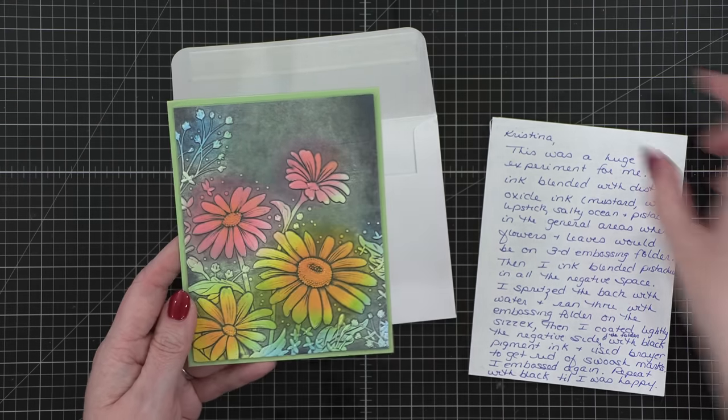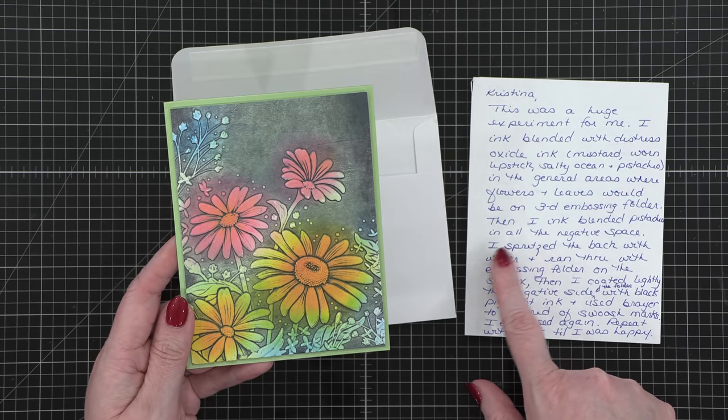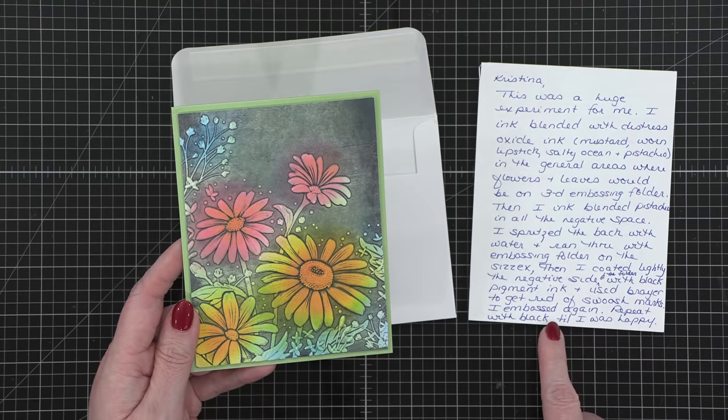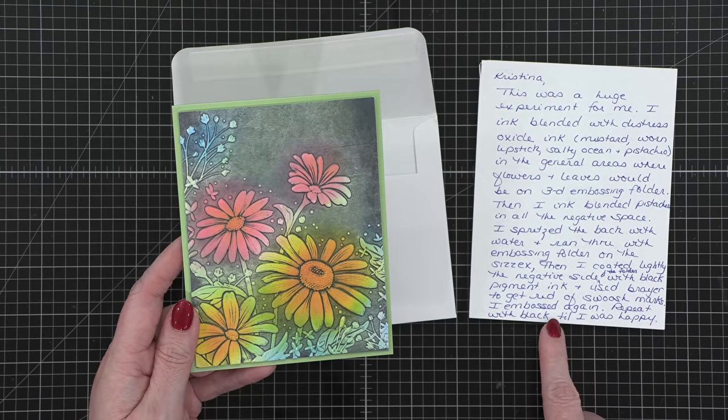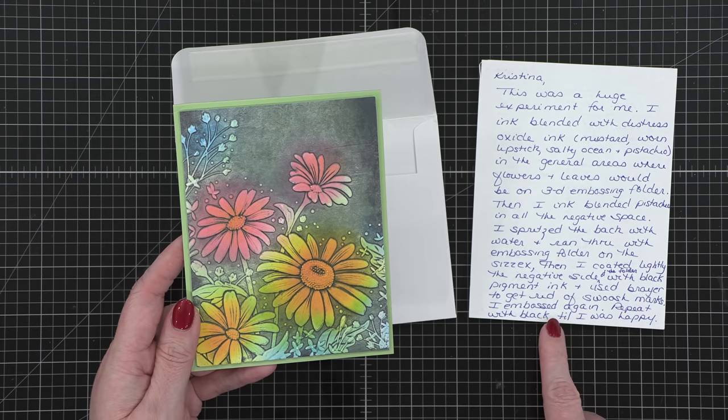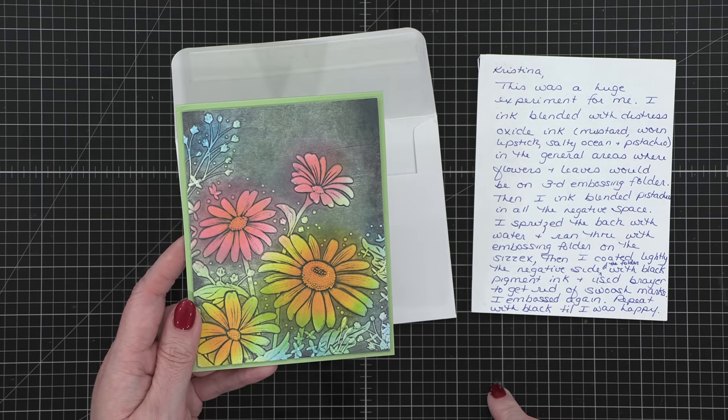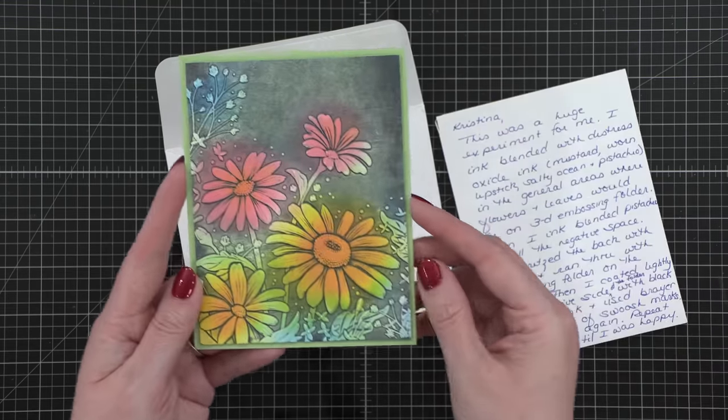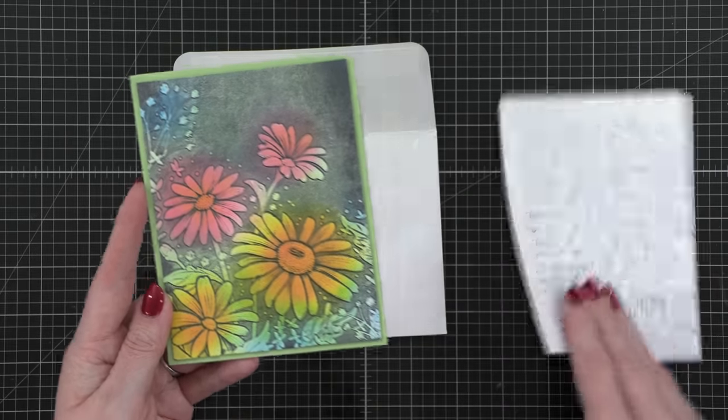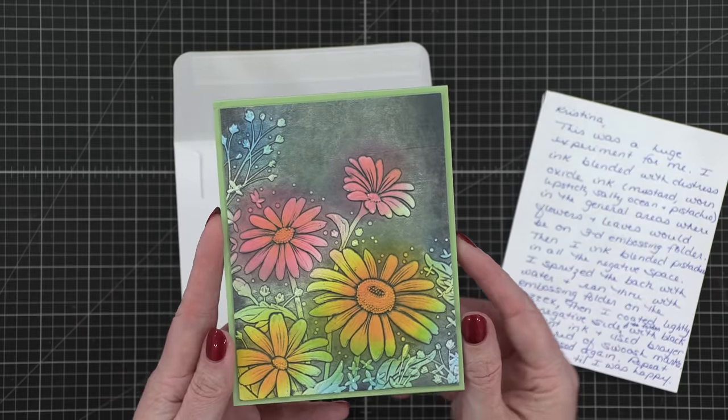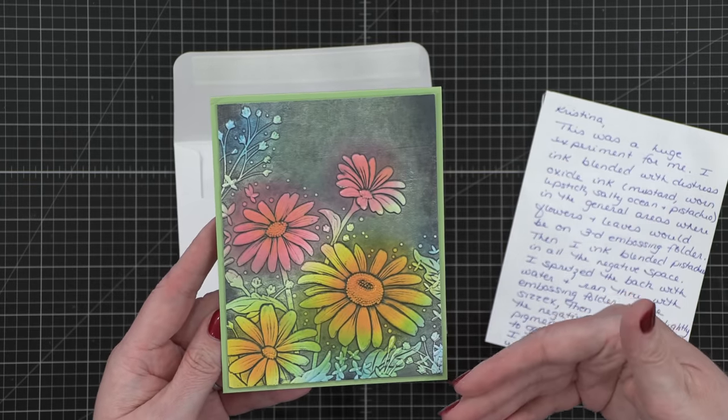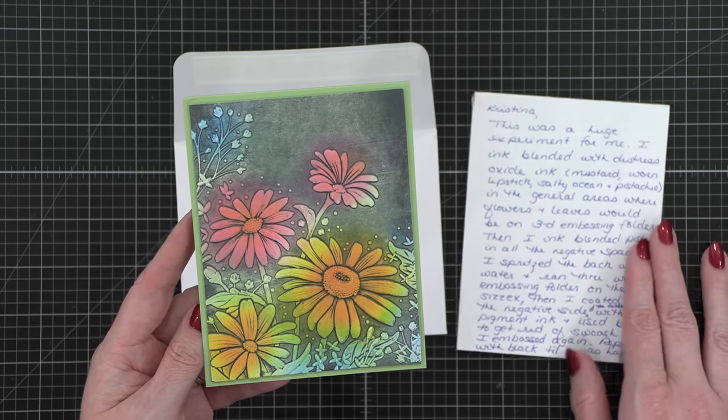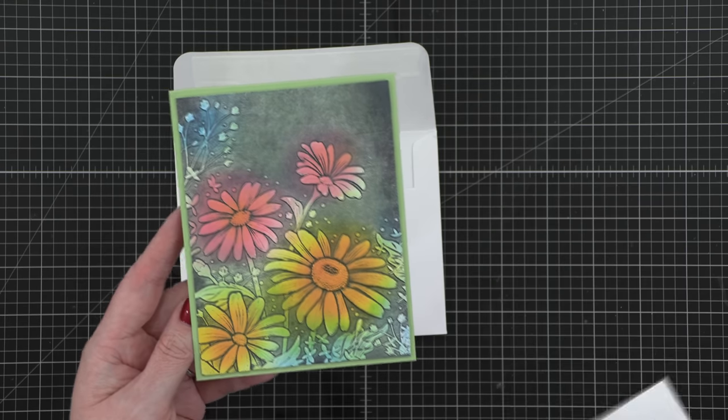Then I ink blended pistachio in all of the negative space. So she did pistachio all around all of the other areas. I spritzed the back with water and ran through with the embossing folder on the Sizzix. Then I coated lightly the negative side of the folder with black pigment ink and used a brayer to get rid of the swoosh marks. I embossed again. Repeat with back till I was happy. Didn't work with gray ink as well. So such a fun way to use an embossing folder. And she sounded like she was able to put the embossing folder through multiple times and have it line up just perfectly. So that's amazing. That's a feat in and of itself. Such a fun, creative way to do a little bit of ink blending on an embossing folder.